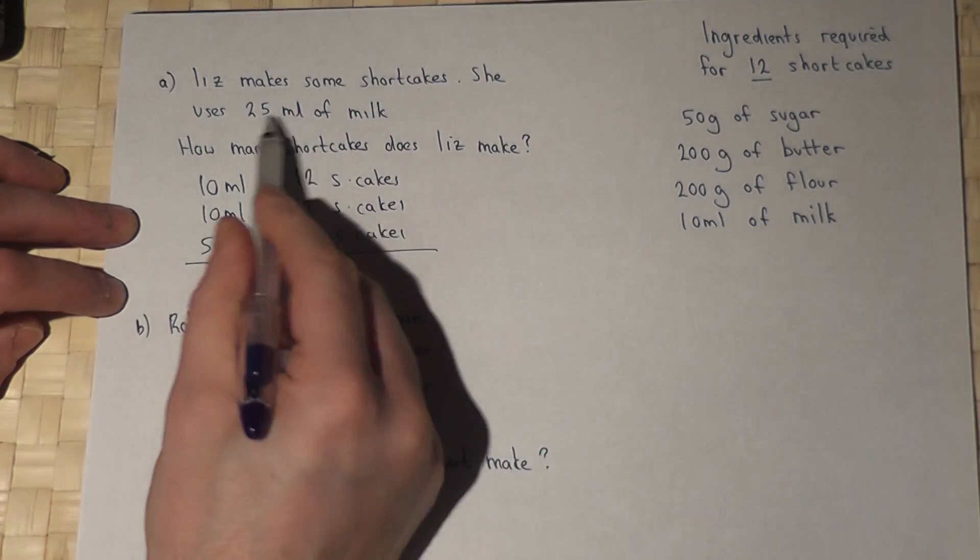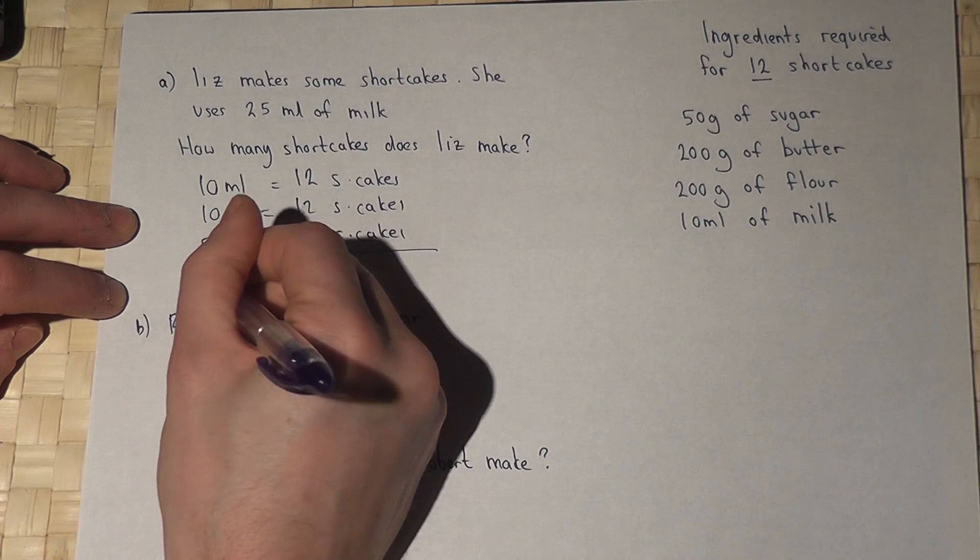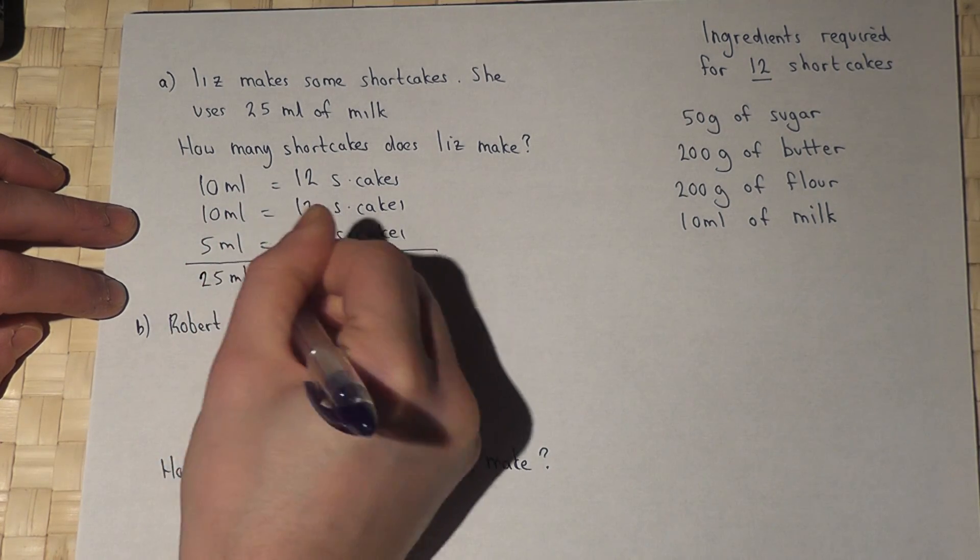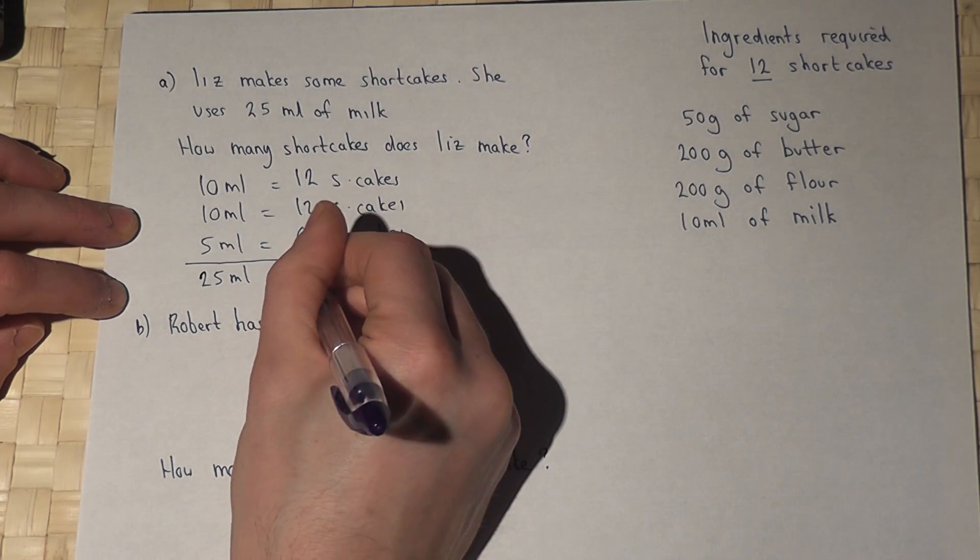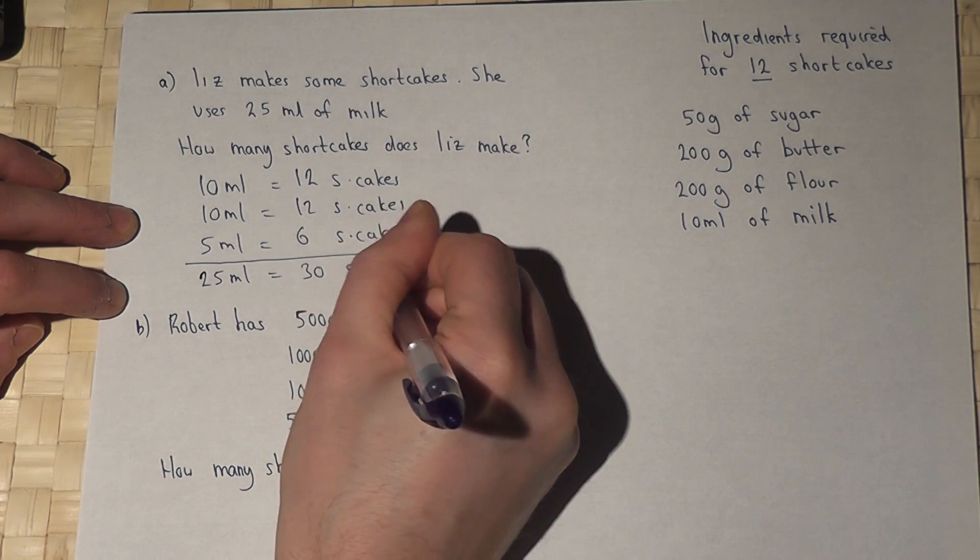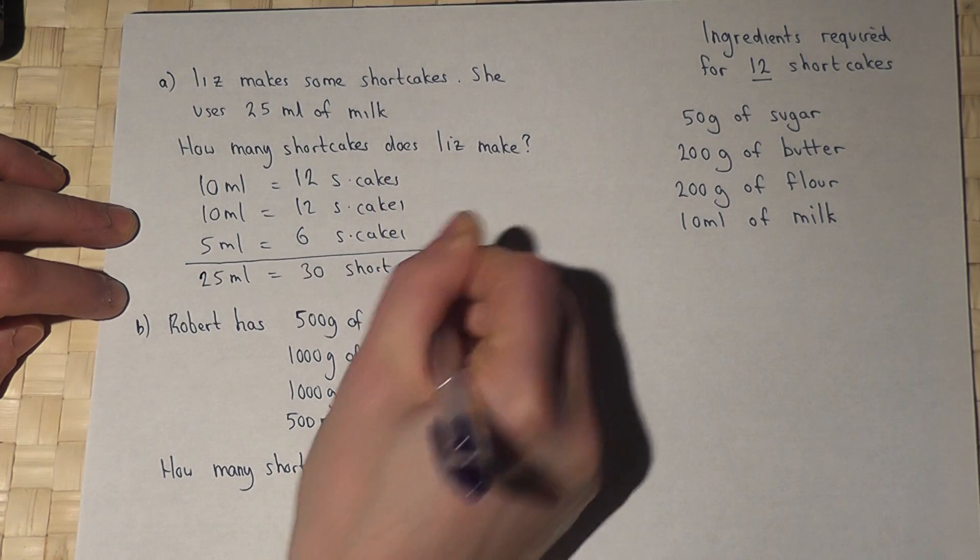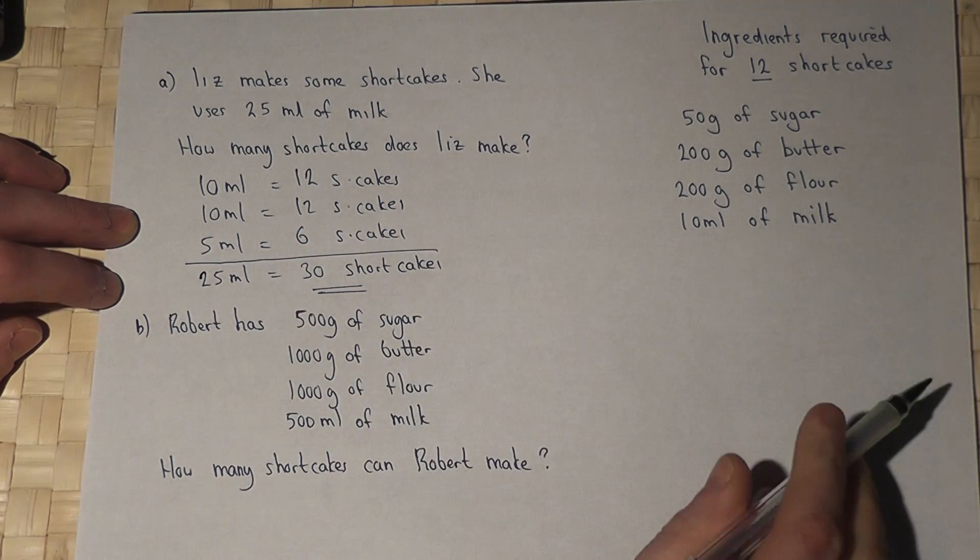So if Liz uses 25—10, 10, and 5—then 25 milliliters will equal 12 plus 12 is 24 plus 6, which is 30 shortcakes. So Liz has made 30 shortcakes.